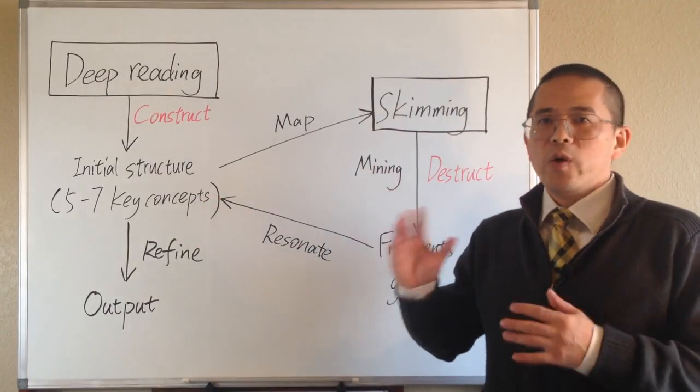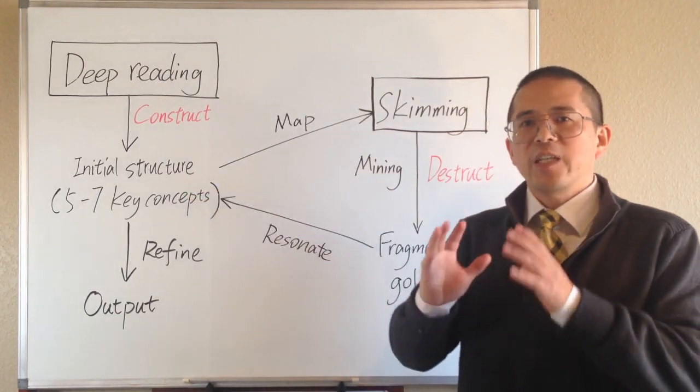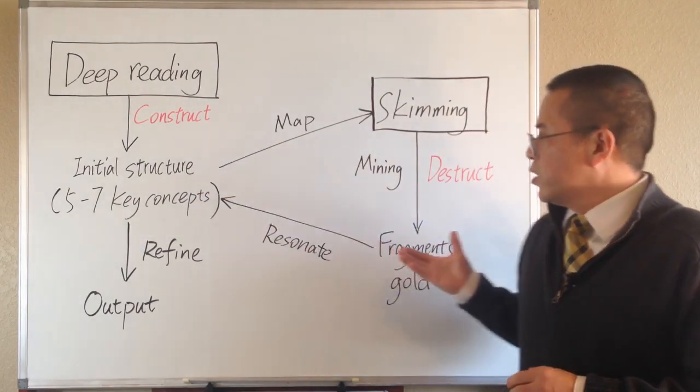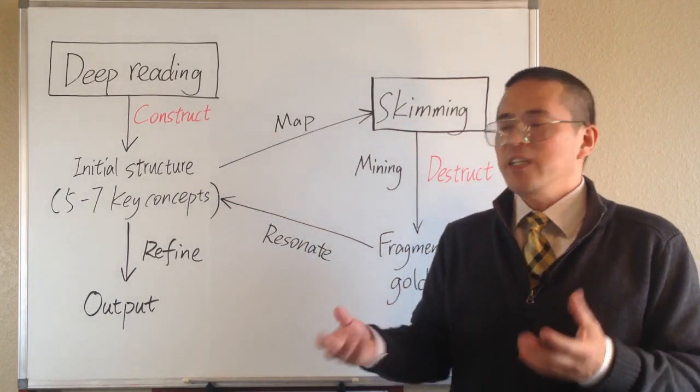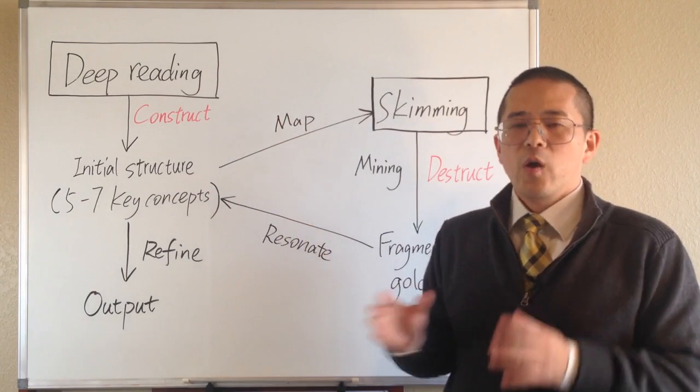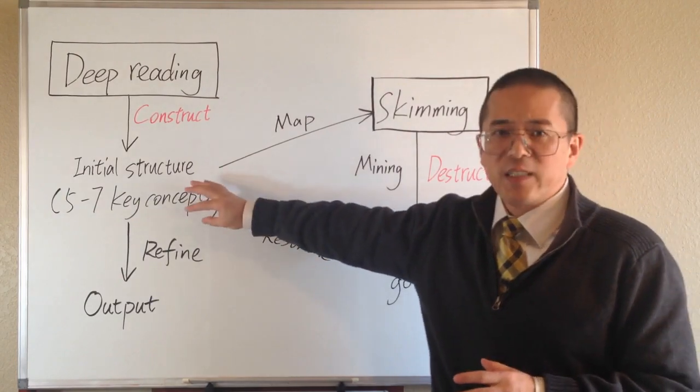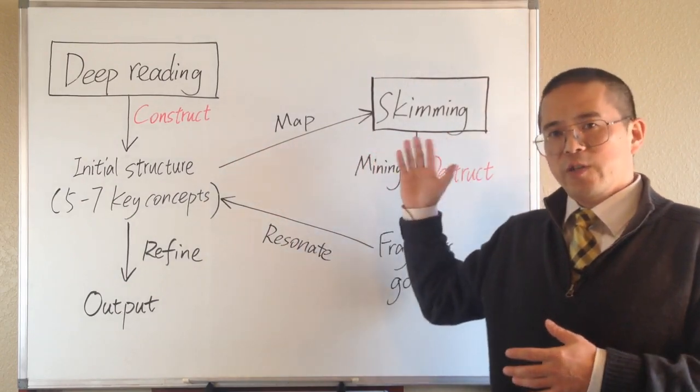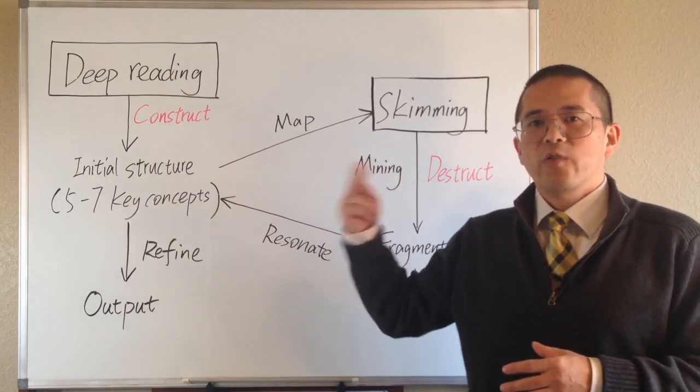After some skimming, we may accumulate more than 10 new ideas under each key concept. And it may be a good time to revise the existing structure of our knowledge framework based on the new information from skimming. By reviewing our notes, we may be able to identify new concepts or sub-concepts that deserve further study. Also, if some books we skimmed contribute significantly to the existing key concepts, these books may deserve a deep reading before we further skim more books. And we can repeat the cycle for multiple times.